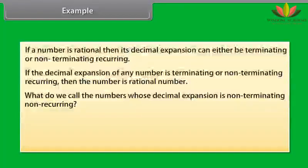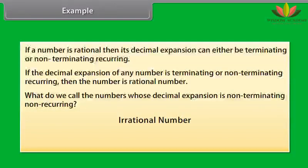And what do we call numbers whose decimal expansion is non-terminating, non-recurring? Those numbers are irrational numbers — for example, √2, π, etc.